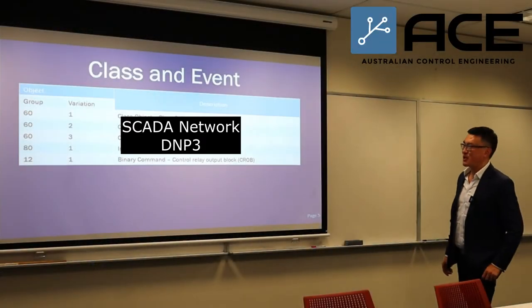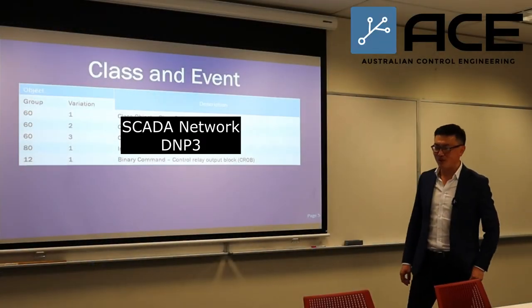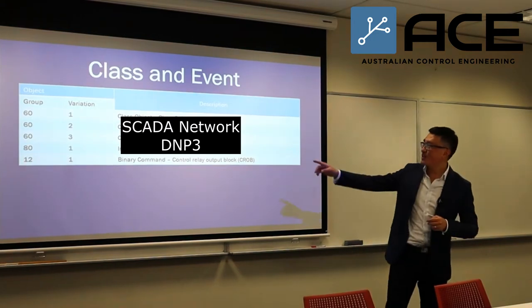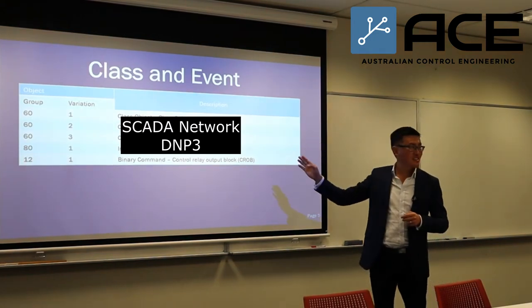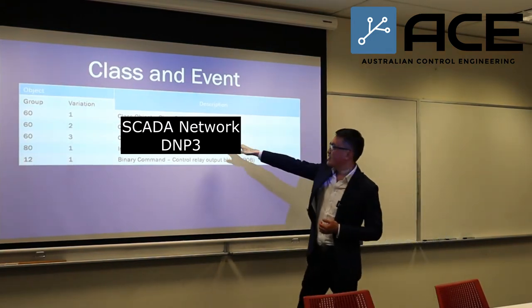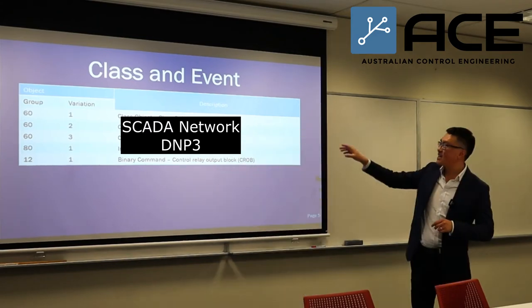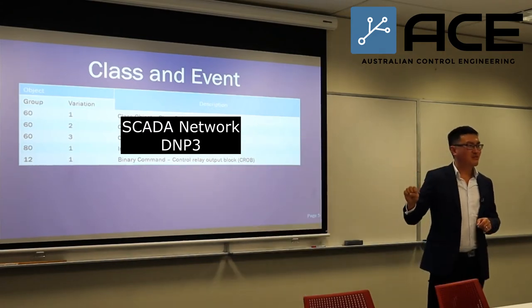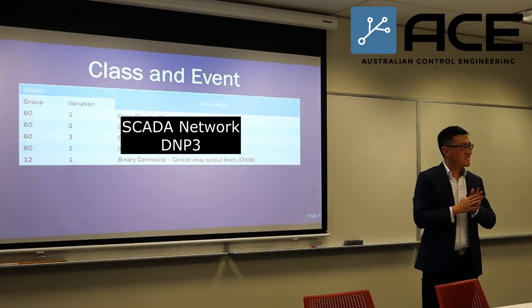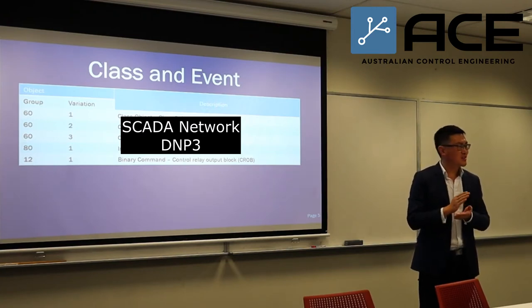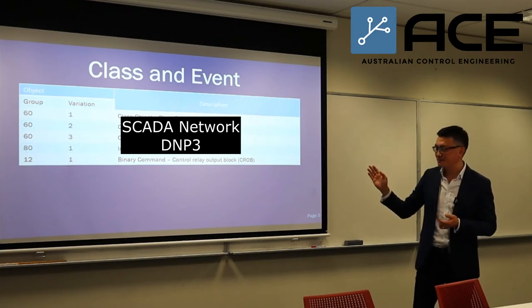The other thing about DNP3 protocol is very, very interesting. It's unique. It's got a class and event — class zero, one, two, and three. And it has event as well. Event means that something happened — some specific things happened as a record. It's called event. Event and class.